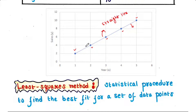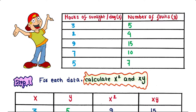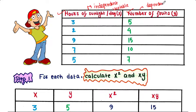You can see that this line is very close to these data points. Let's see an example. This is Harry and he noted down hours of sunlight per day from Monday to Friday and the number of fruits produced. Hours of sunlight is the independent variable. We will check whether these two variables have a linear relationship like the previous graph or not.